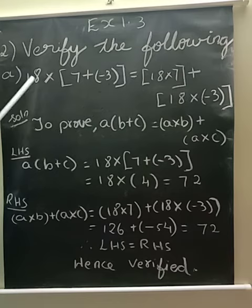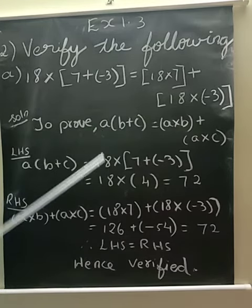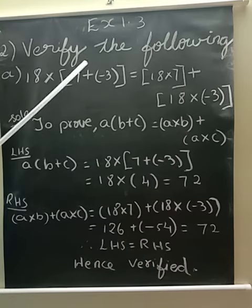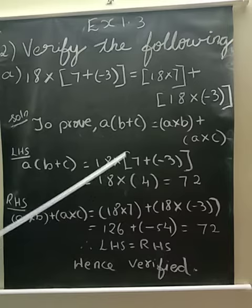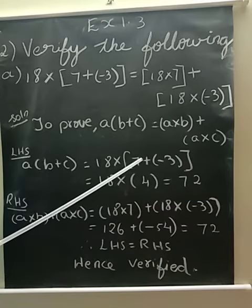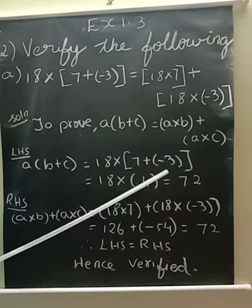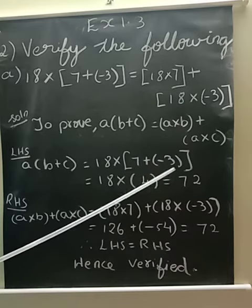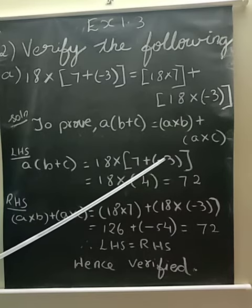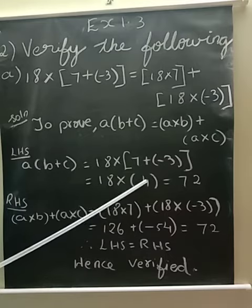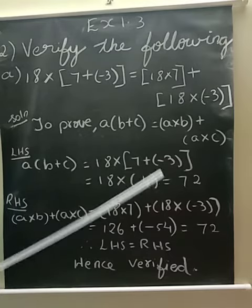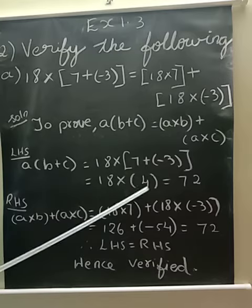So what is the left-hand side? A into B plus C. A is 18, B is 7, and C is minus 3. So first, always we have to solve the brackets first. So 7 plus of minus 3, what is 7 plus of minus 3? Here it is plus and here it is minus, so what we have to do? Subtract. 7 minus 3 is 4. Greater number sign plus, so it is 4.